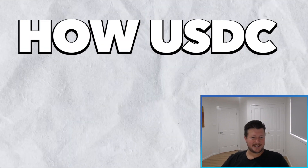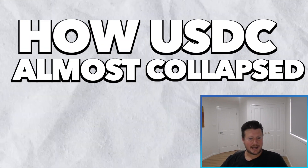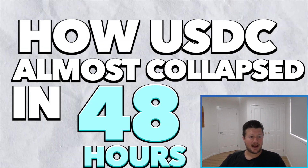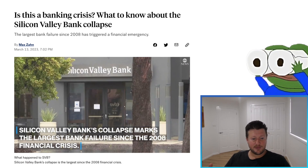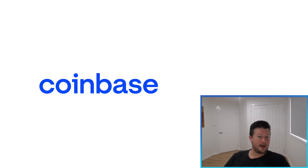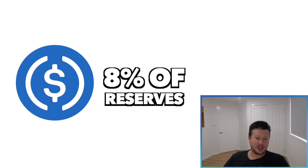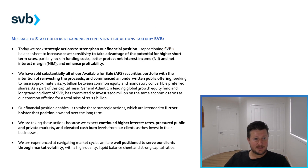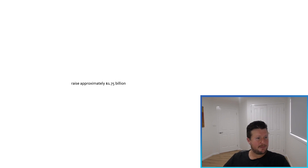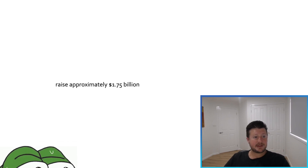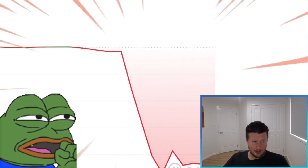Let's run through how USDC almost collapsed in 48 hours. We'll start with Silicon Valley Bank. Coinbase itself had a large sum of their USDC reserves backed up in that bank. There was a big announcement of the collapse of the bank, and that presented a major issue as market confidence dropped.